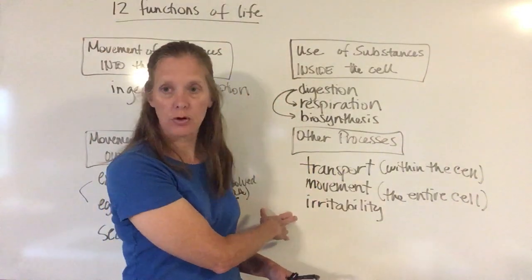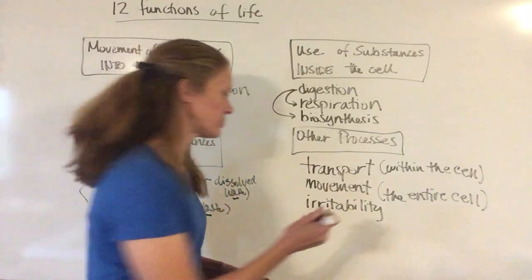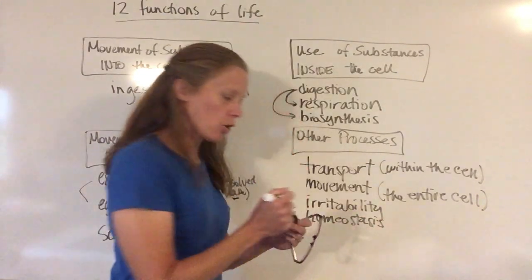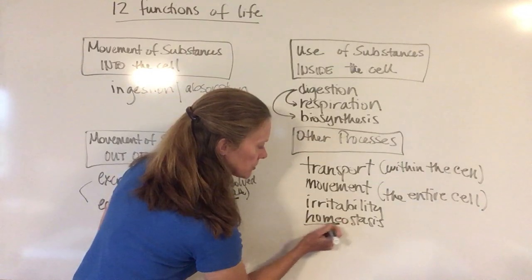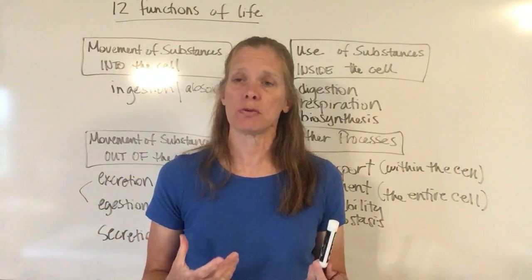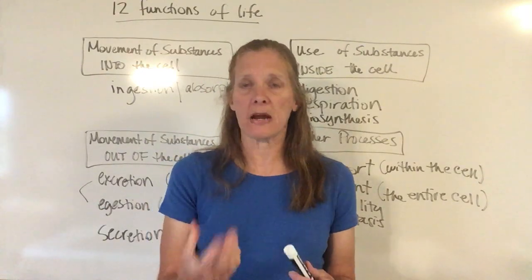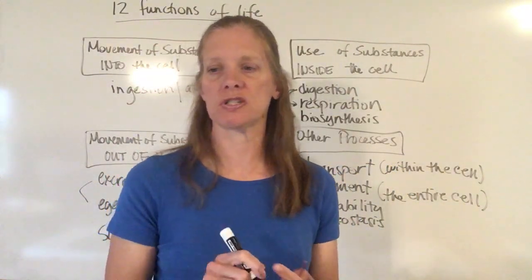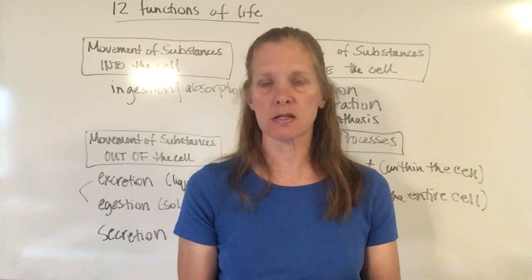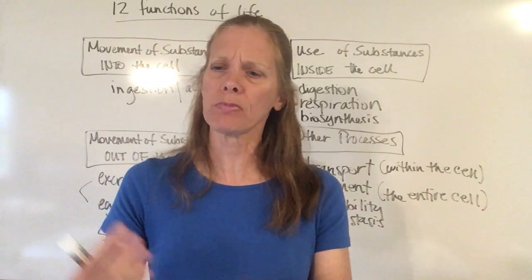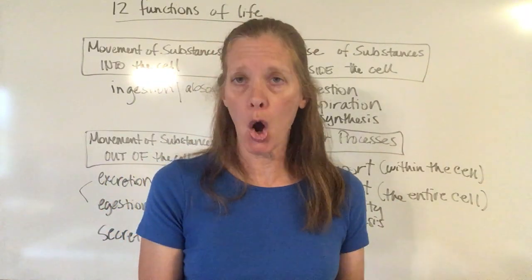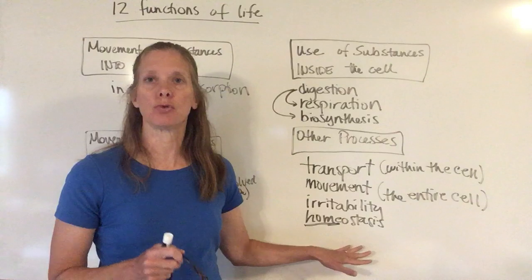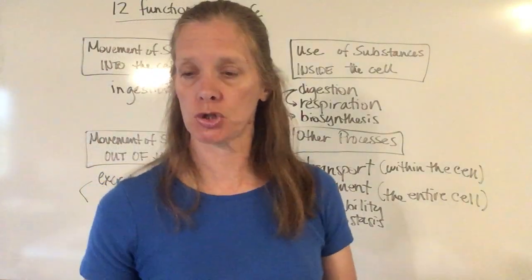Another thing the cell has to do is called homeostasis. You can see the word 'home' in the middle of it — homeostasis is what you do to make your house a home. Your parents assign you chores: clean the bathroom, cook dinner, wash the dishes, take out the trash, mop, mow the lawn. All of those chores keep everything running smoothly. The cell also has to do things to make sure everything just keeps running and working the way it's supposed to.